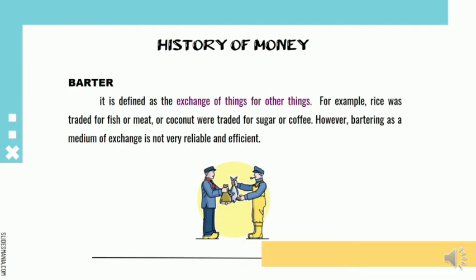However, bartering is not a very reliable and efficient medium of exchange. For example, if I want meat but only have fish to offer, I have to find someone willing to exchange his meat for my fish. But if that person does not want fish — instead he wants a sack of rice — then I have to find someone willing to exchange his sack of rice for my fish before I can get the meat.